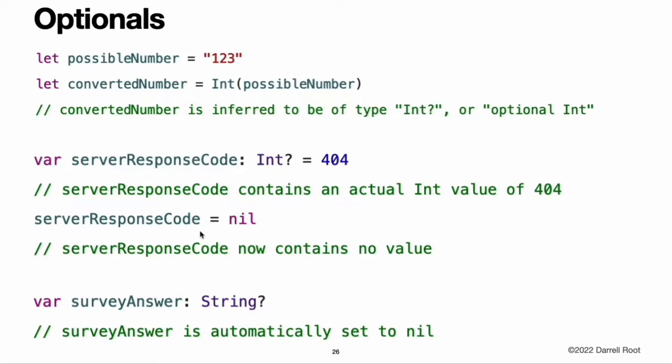Nil. You set an optional variable to a valueless state by assigning it the special value nil. Note: you cannot use nil with non-optional constants and variables. If a constant or variable in your code needs to work with the absence of a value under certain conditions, always declare it as an optional value of the appropriate type. If you define an optional variable without providing a default value, the variable is automatically set to nil for you.